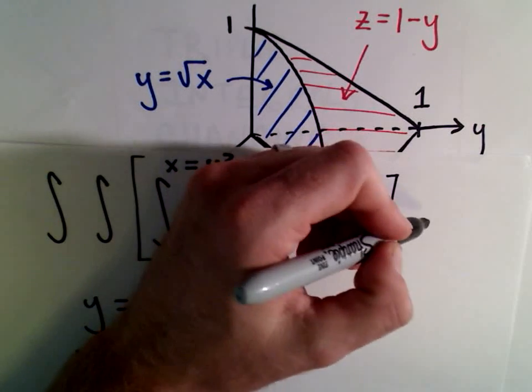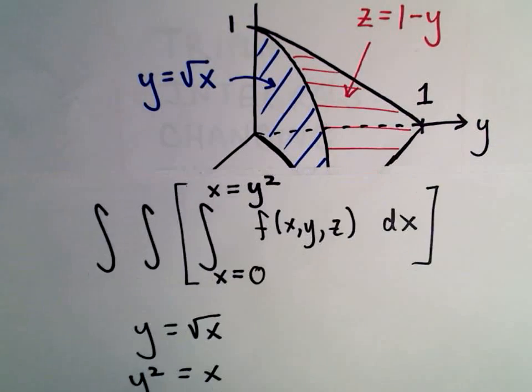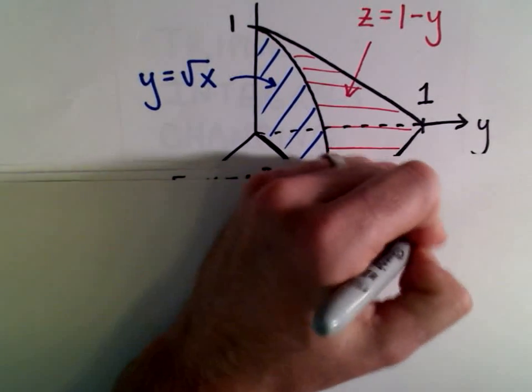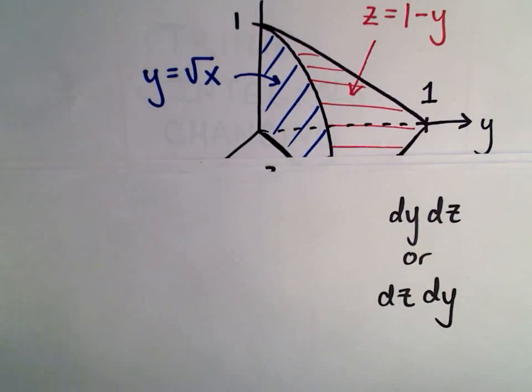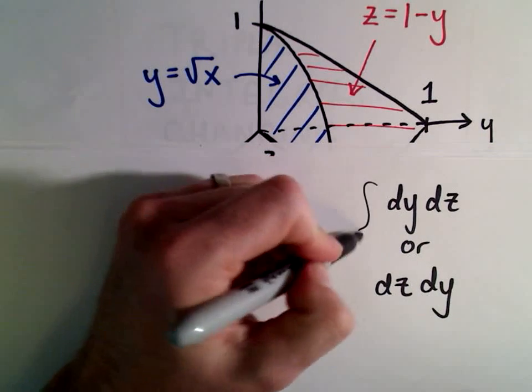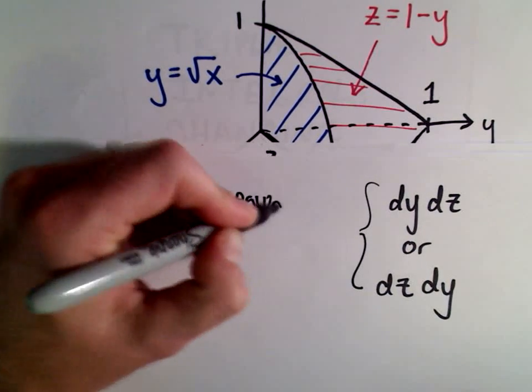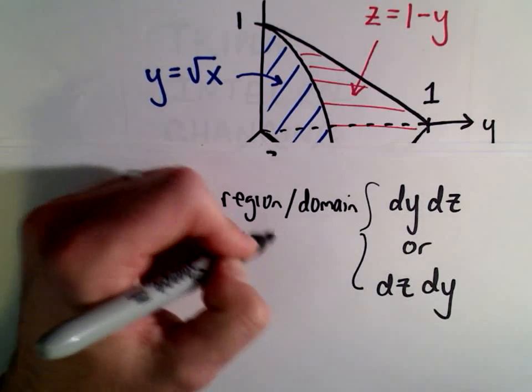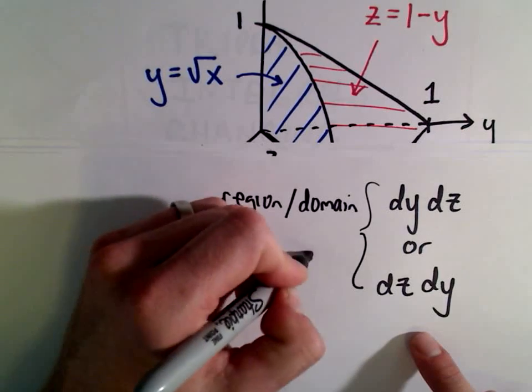Now I've got to do either dz dy or dy dz. So let's talk about that in a second. So now I know I've got to do either dy dz or dz dy. And again, we're going to do them both. So what I really need to do is I need to think about the region, the domain.